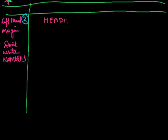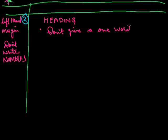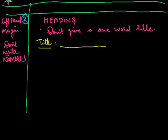Write the title in block letters and underline the title. Don't give a one-word title — that is a main point. After reading the passage, write your title here. Then you will start making notes, writing the main point.